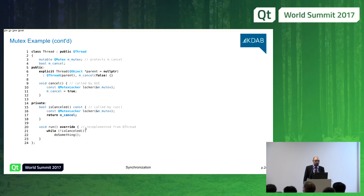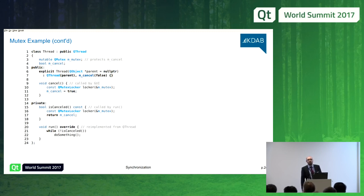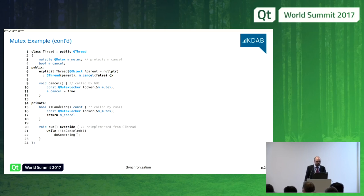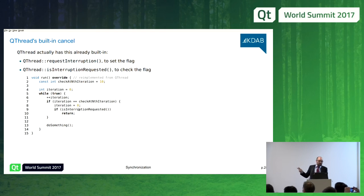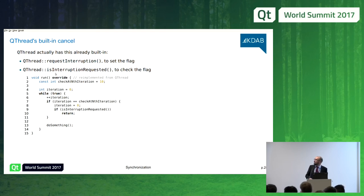Why does the initial assignment to mCancel in the constructor not need mutex protection? Because the thread is not running yet — it doesn't even exist until the constructor returns, so there cannot be a data race. Also note: QThread already has a built-in feature for this pattern — the requestInterruption function sets an interruption flag, and inside run you can poll isInterruptionRequested. Please don't reinvent this — use the built-in support.